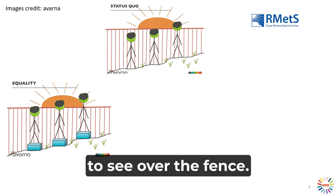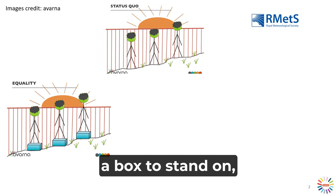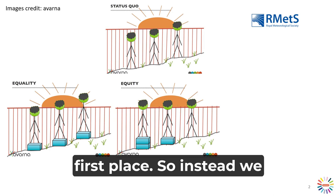We might think about wanting to make more people able to see over the fence, and that might involve giving people some kind of accommodation — a box to stand on in this case. If we treat everyone the same and give them all a box to stand on, we now have two people who can see over the fence, but one person still can't. We really haven't taken into account the fact that the land underneath was sloping in the first place.